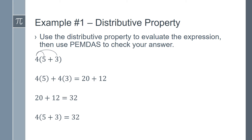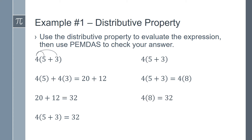Now we can use PEMDAS to see if we get the same answer. Start with the same expression, and this time work inside the parentheses first. 4 times (5 plus 3) becomes 4 times 8. 4 times 8 equals 32, so we know that we used the distributive property correctly.